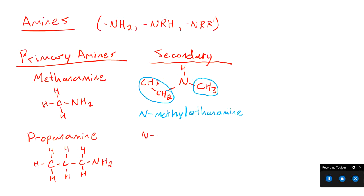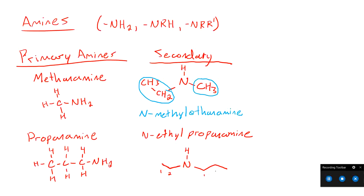Let's do another example — N-ethylpropanamine. We start with our nitrogen, and we're dealing with a secondary amine, so we have one ethyl group coming off — two carbons in the skeletal structure — and a propane group coming off: one, two, three carbons. So that's our structure for N-ethylpropanamine, a secondary amine.